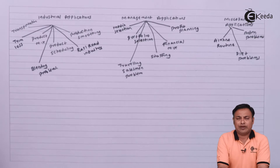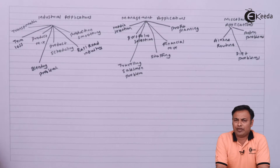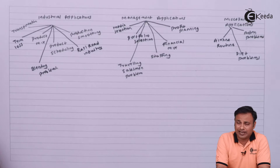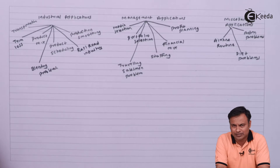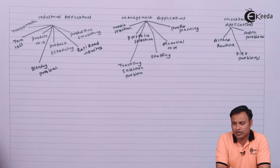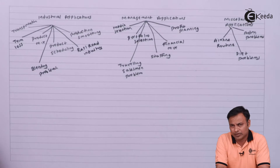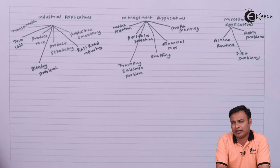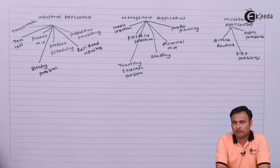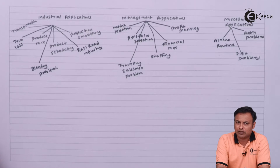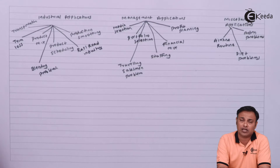Under management applications, we can use linear programming in multiple ways. One way is to select the media — among available media such as radio, TV, internet, newspapers, and magazines — so that overall reach or audience is maximized. It can also be used for portfolio selection, where we decide the portfolio mix to optimize profit and allocate money to particular resources.